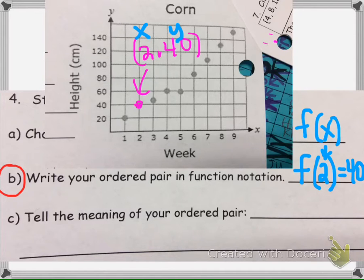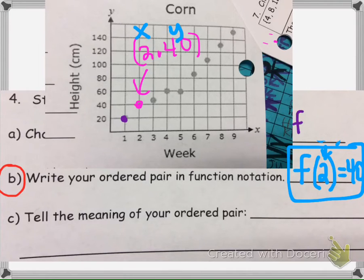So that is my ordered pair written in function notation. So if instead we had picked this point, for instance, then I would have F of 1 equals 20.